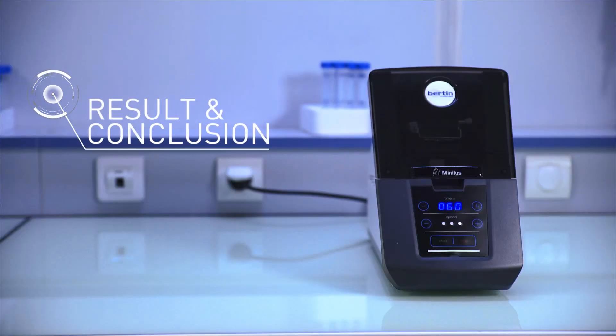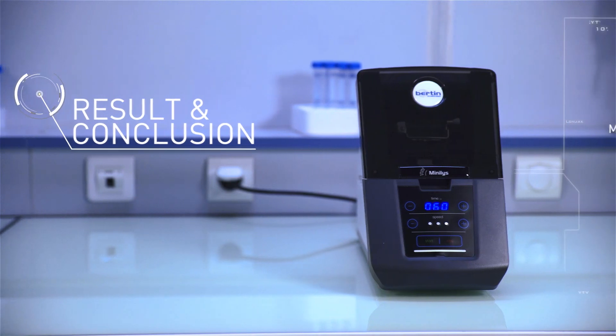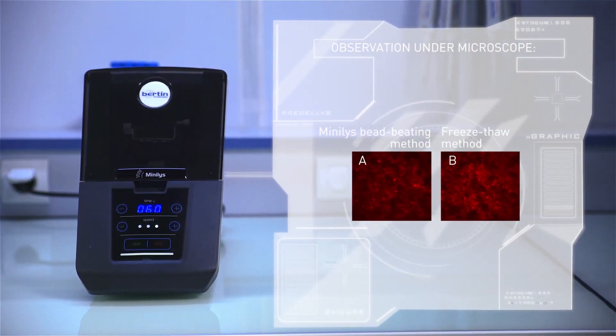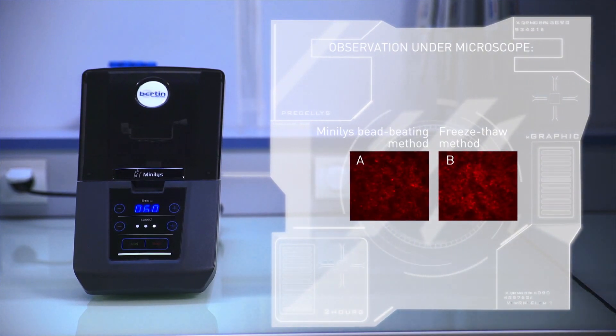The images show that the Minilis efficiently releases rAAV vectors and the resulting crude cell lysate is effectively used to transduce HEK293T cells in image A.